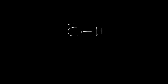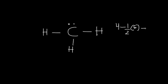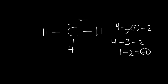We have carbon here. To calculate the formal charge of carbon, we know carbon has four valence electrons, minus one-half, and it's connected to one, two, three — three bonds, so that's six electrons. Minus one lone pair, so two electrons. Half of six is three, so four minus three is one, minus two, which gives us negative one. So carbon here has a negative charge.